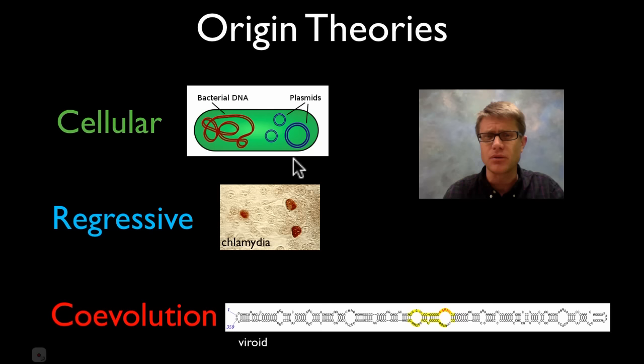Where did viruses come from? Well we probably will never know the right answer to this, but here's a few theories. There's the cellular theory that they used to be part of cells. So a plasmid for example is given off by bacteria, it can be picked up by other bacteria. Maybe they started that way. Or maybe they were full-on cells that regressed. Chlamydia for example is a type of cell that's lost the ability to live on its own, and so now it's an obligate parasite.